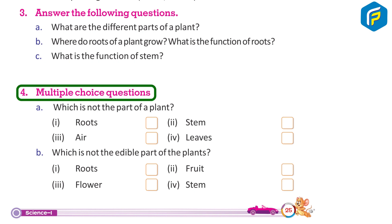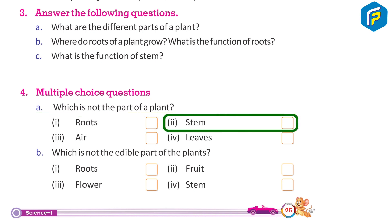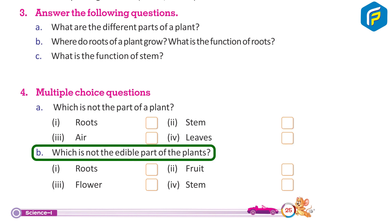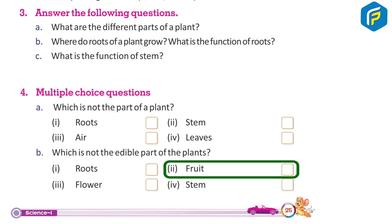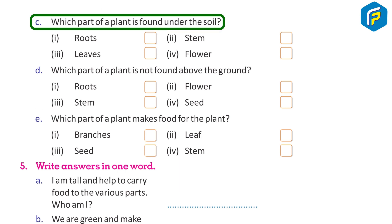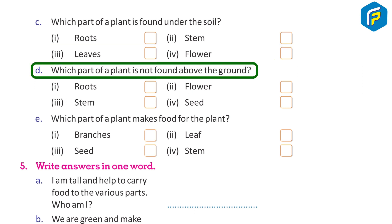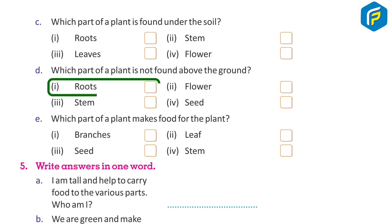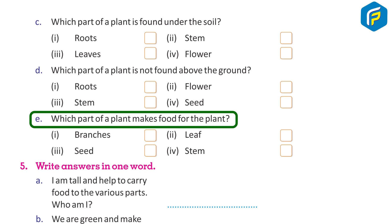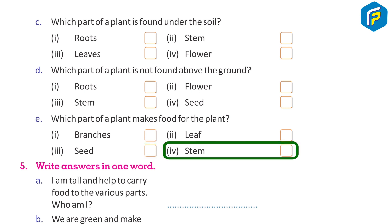Multiple choice questions. A. Which is not the part of a plant? 1. Roots, 2. Stem, 3. Air, 4. Leaves. B. Which is not the edible part of the plants? 1. Roots, 2. Fruit, 3. Flower, 4. Stem. C. Which part of a plant is found under the soil? 1. Roots, 2. Stem, 3. Leaves, 4. Flower. D. Which part of a plant is not found above the ground? 1. Roots, 2. Flower, 3. Stem, 4. Seed. E. Which part of a plant makes food for the plant? 1. Branches, 2. Leaf, 3. Seed, 4. Stem.